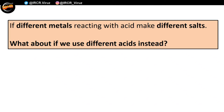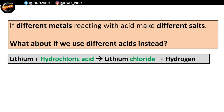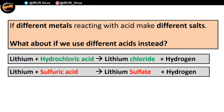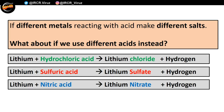If different metals reacting with acid make different salts, what about if we use different acids? If we have lithium plus hydrochloric acid, it gives us lithium chloride plus hydrogen. If you have lithium with sulfuric acid, you will get lithium sulfate plus hydrogen. And if you have lithium reacting with nitric acid, you're going to get lithium nitrate plus hydrogen. So depending on what acid you're using, the name of the salt can also change.